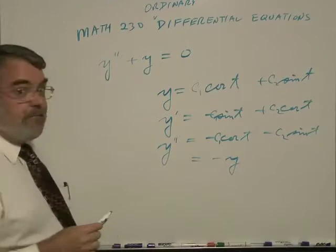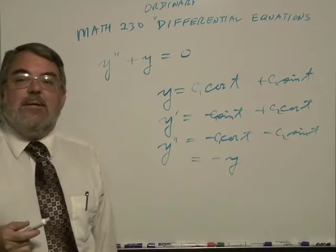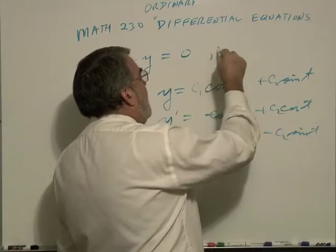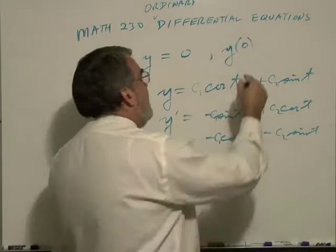Now, suppose, however, this problem came with some boundaries. For example, the initial position, position is described by y of t. The initial position, when time is zero, suppose it's one,